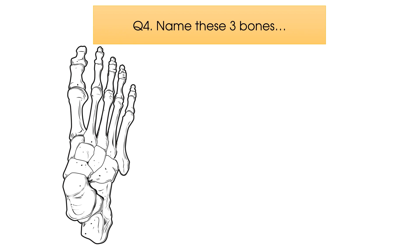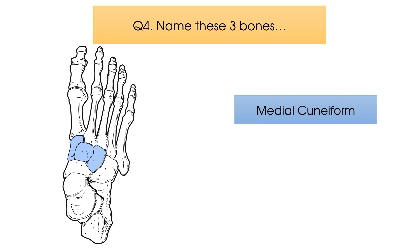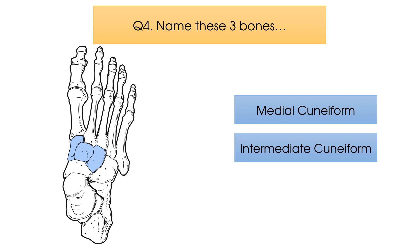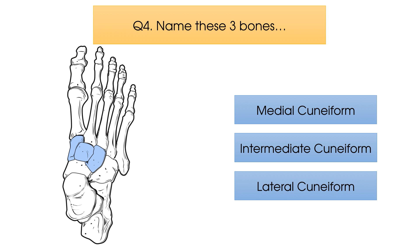Question number four: can you name the three bones highlighted here in blue? Time's up. The three bones are the cuneiform bones — the medial cuneiform being the most medial of the three, the intermediate cuneiform in the centre, and the lateral cuneiform being the most lateral of the three.